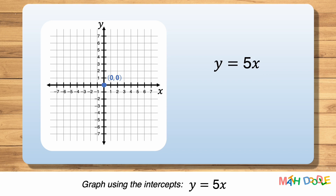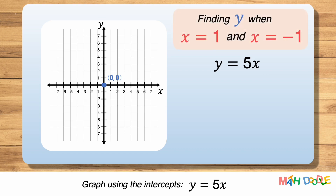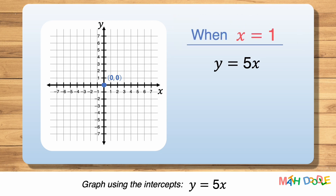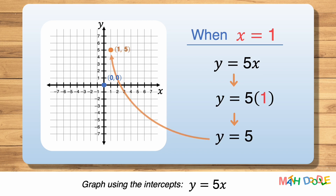For this, we can choose any values for x or y. Here, let's use x equals 1 and x equals minus 1, and find the values of y when x is 1 and minus 1. First, let's find the value of y when x is 1. We are going to substitute 1 for x. 5 times 1 is 5, and the equation becomes y equals 5. So, when x is 1, y is 5. This tells us that the line of the equation passes through the point (1, 5).